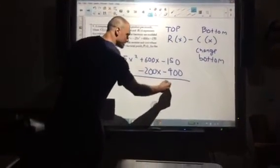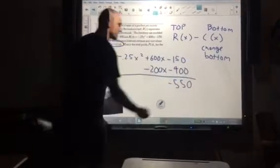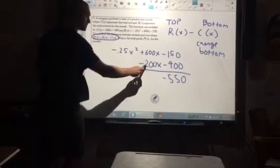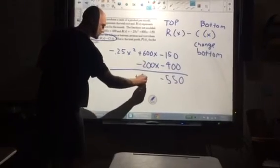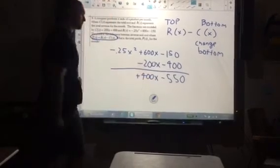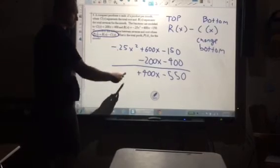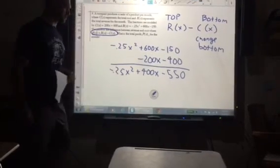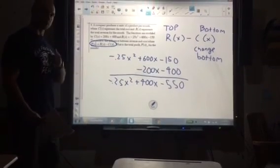Negative 150 minus 400 gives me minus 550. 600 minus 200 is going to give me 400x, and then we just bring down the negative 0.25x squared. There's our answer. Good job.